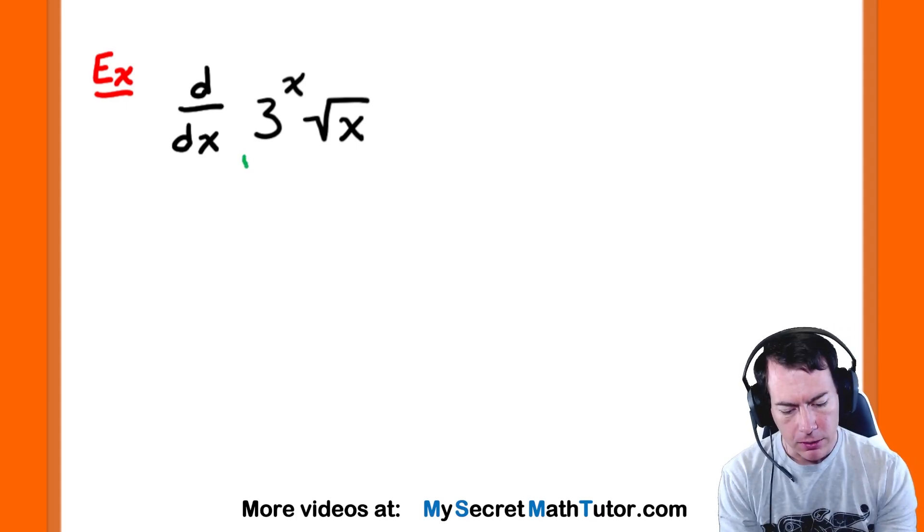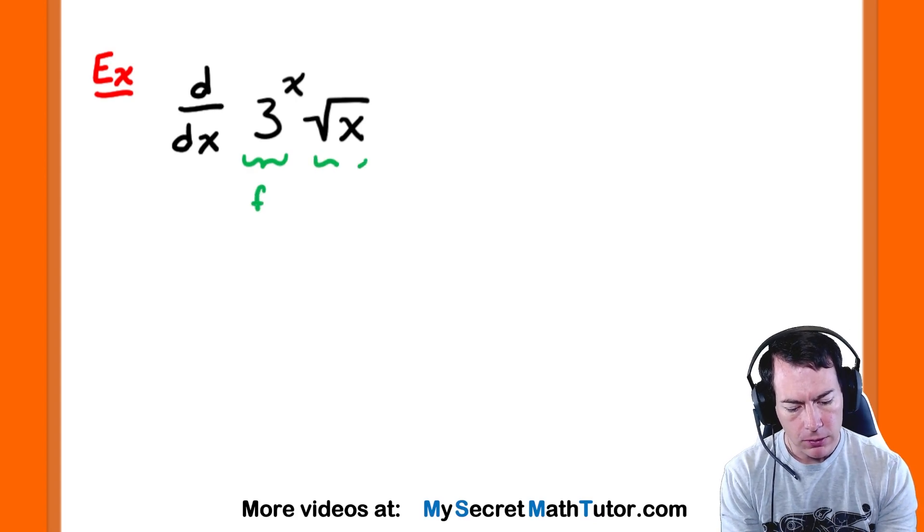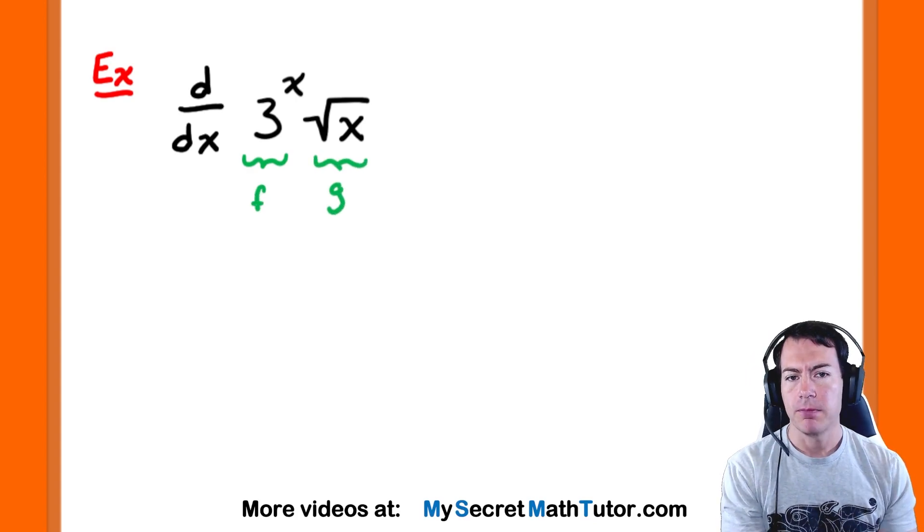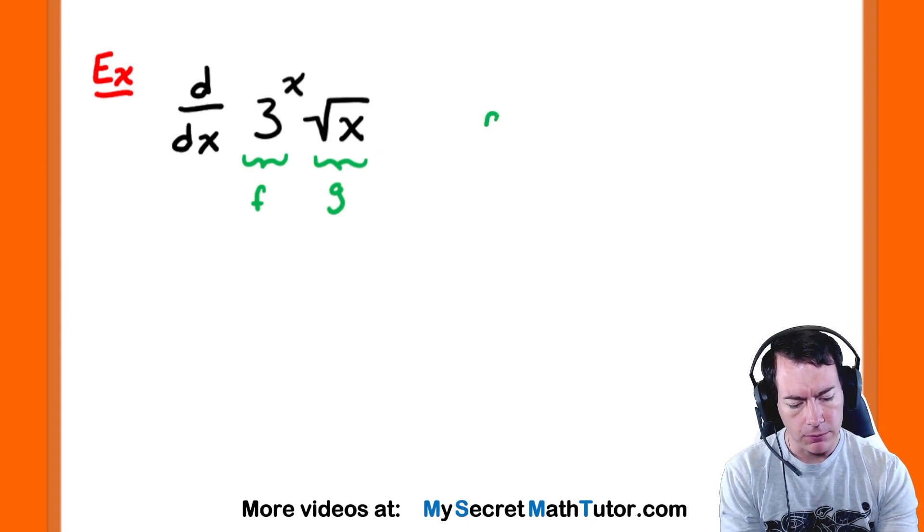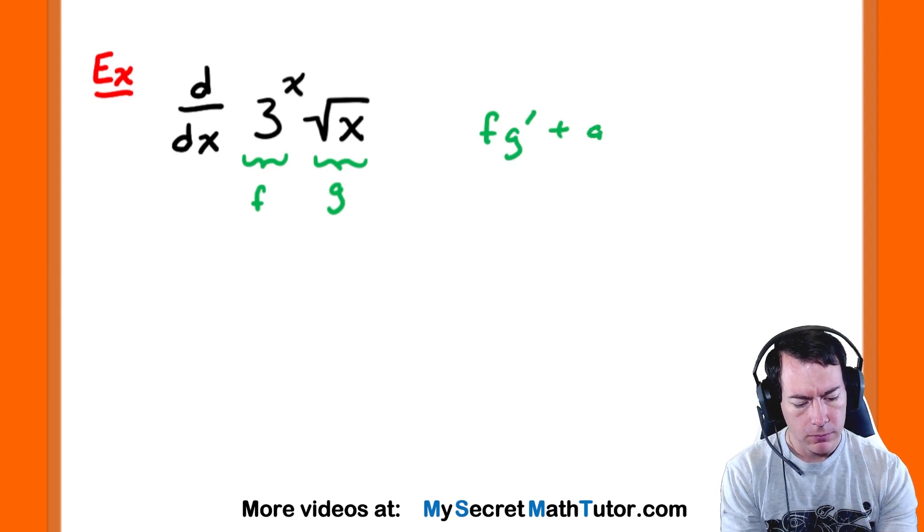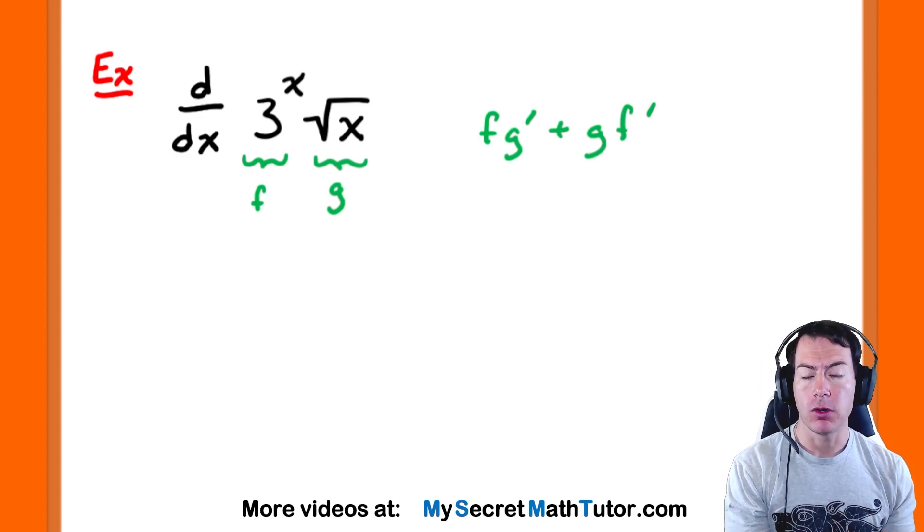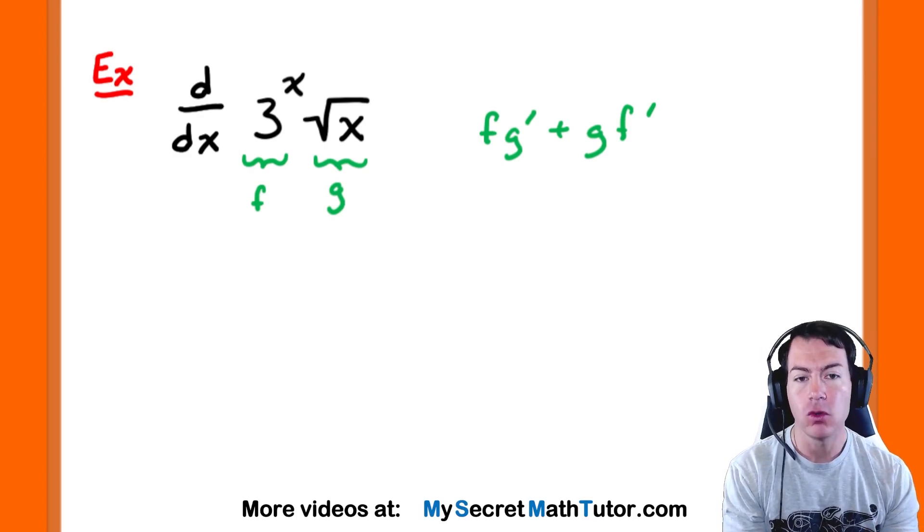So let's go ahead and identify our functions that we have in here. So I'm going to call this first one f. I'm going to call the second one g. And I'm really just doing that so I can remember my product rule. So I'll be taking the first function as it is, multiplied by the derivative of the second, second function as it is, multiplied by the derivative of the first. So those are the pieces that we're going to put into our product rule.